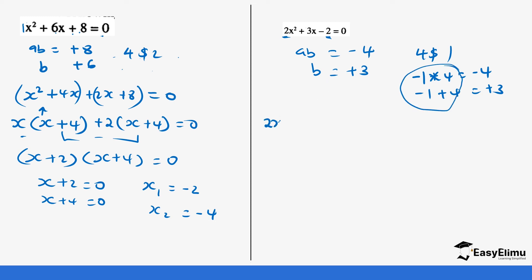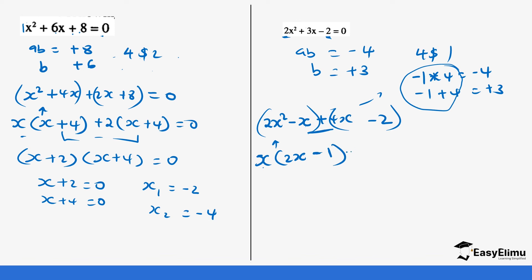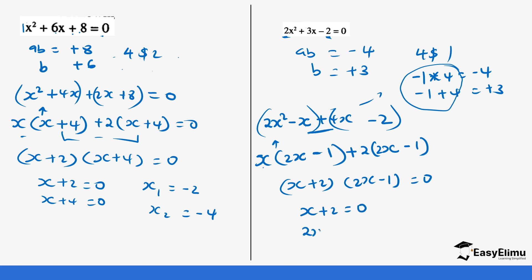When you go back to the equation, it becomes 2x squared minus x plus 4x minus 2. You group the first pair — what is common is x, giving x(2x minus 1). Then what is common in the second pair is positive 2, giving 2(2x minus 1). So it's (x plus 2)(2x minus 1) equals zero. This gives x plus 2 equals zero and 2x minus 1 equals zero. So x₁ is negative 2, and x₂ is one half — because 2x equals 1, divide both sides by 2.